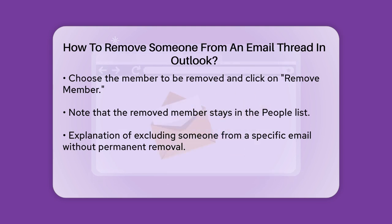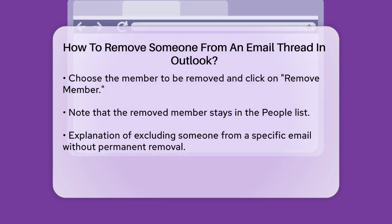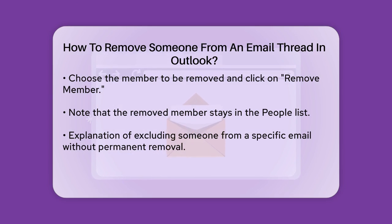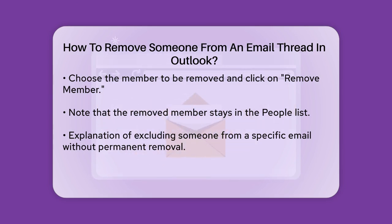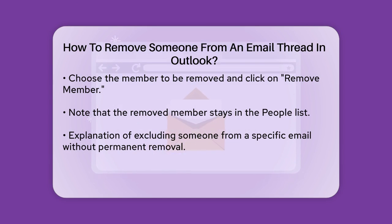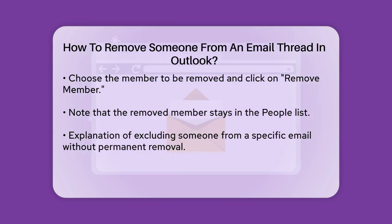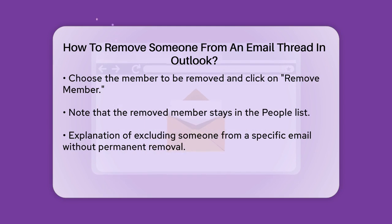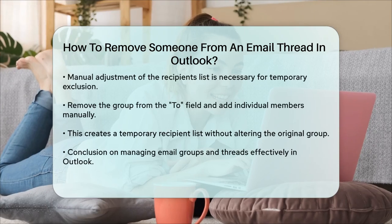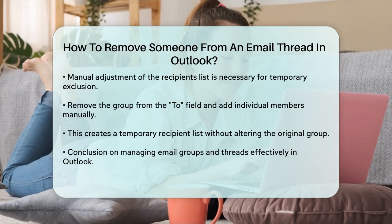In this case, you can't directly delete someone from the group for just one email, but you can manually adjust the recipients list when sending the email. When you add the contact group to the To field of your email, you can't directly edit the group members within the email. However, you can remove the group from the To field, add the individual members manually, and then exclude the person you don't want to receive the email.